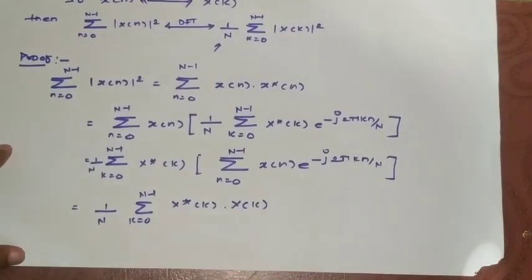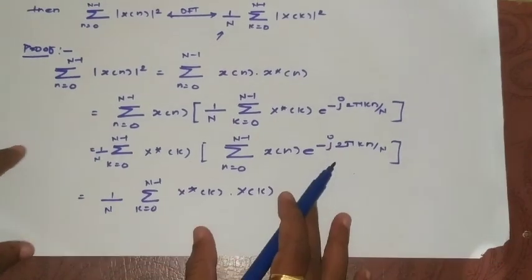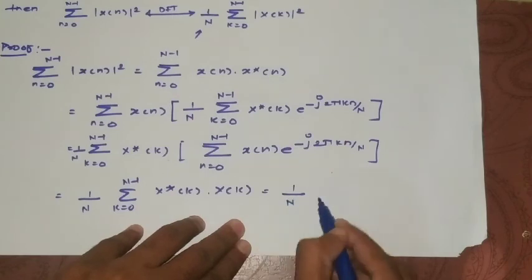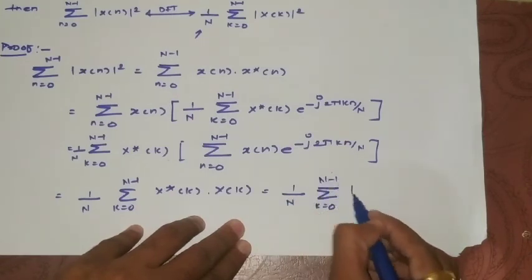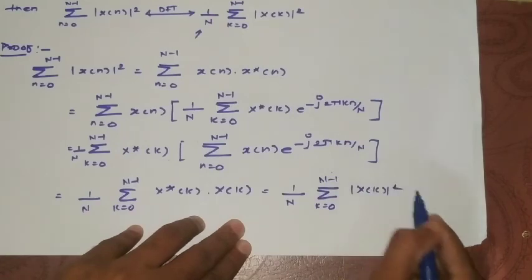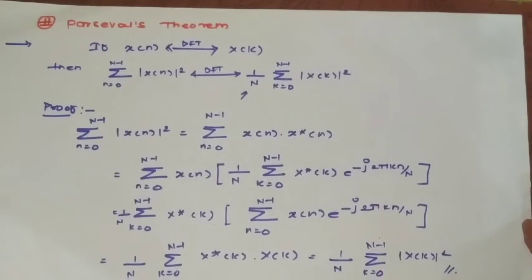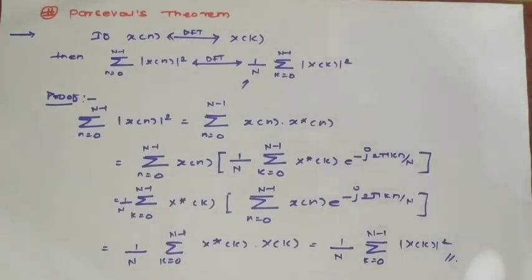When we multiply X(k) with X*(k), the result is 1/N times the summation of |X(k)|². This is Parseval's theorem for discrete Fourier transform. Thank you very much.